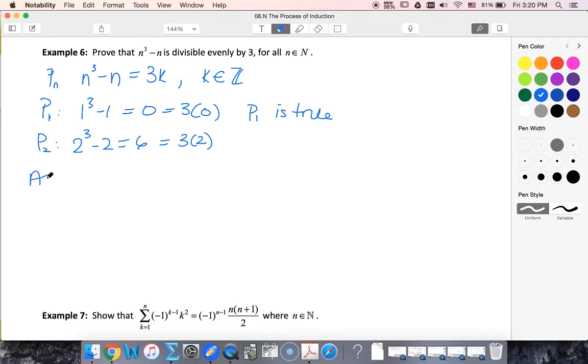So now we're going to assume that P sub k is true. This implies that k³ - k is equal to 3m. So now I'm going to use a different variable.